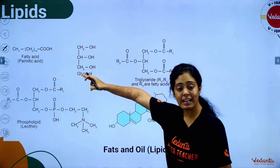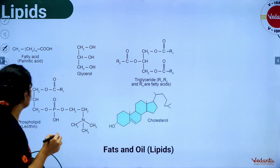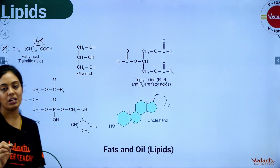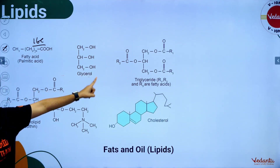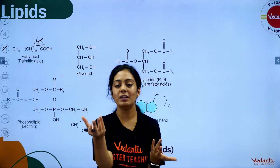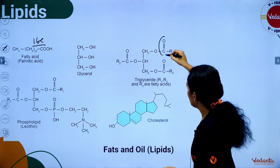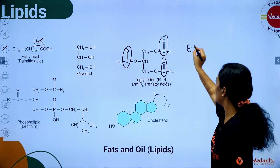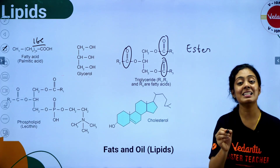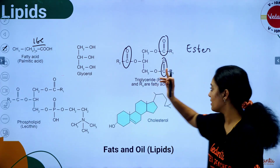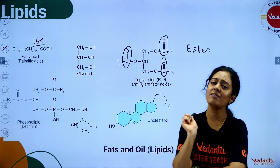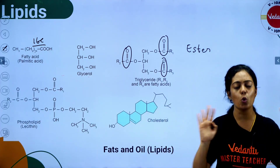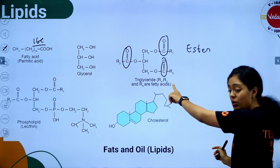Palmitic acid has 16 carbons and is saturated — it does not have a double bond. Given a structure, they can ask you to identify what it is. The bond in a triglyceride is an ester bond. Triglyceride has three fatty acid groups — R1, R2, R3 — which can be the same or different.